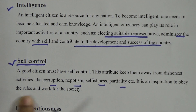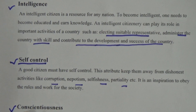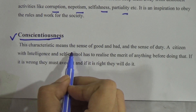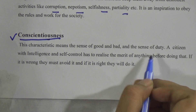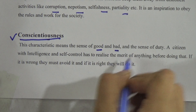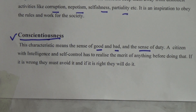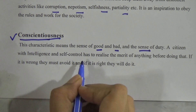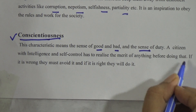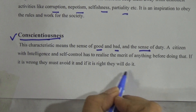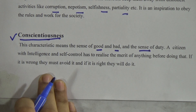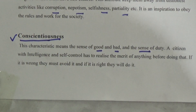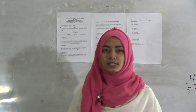Self-control is an inspiration to obey the rules and work for the society. The third quality is conscientiousness. This characteristic means the sense of good and bad and the sense of duty. A citizen with intelligence and self-control has to realize the merit of anything before doing it. If it is wrong, they must avoid it; if it is right, they will do it. So to be a good citizen, we need three qualities: intelligence, self-control, and conscientiousness.